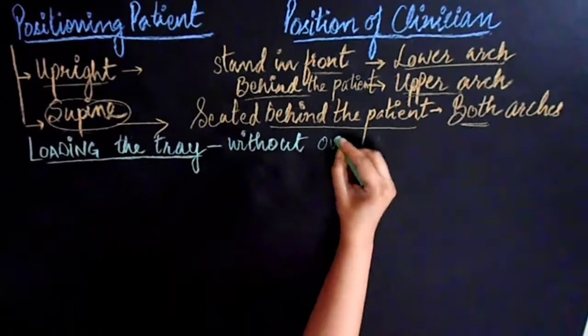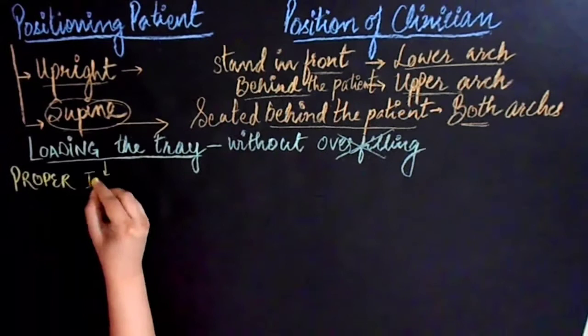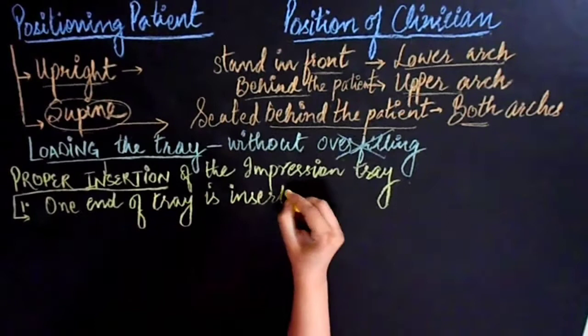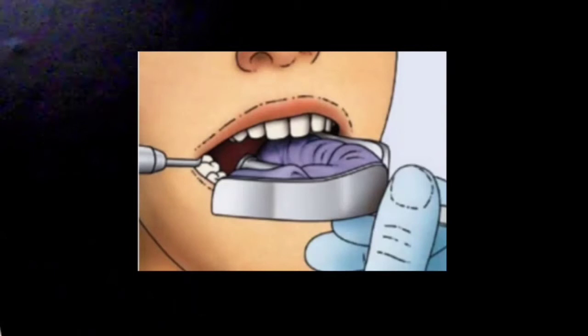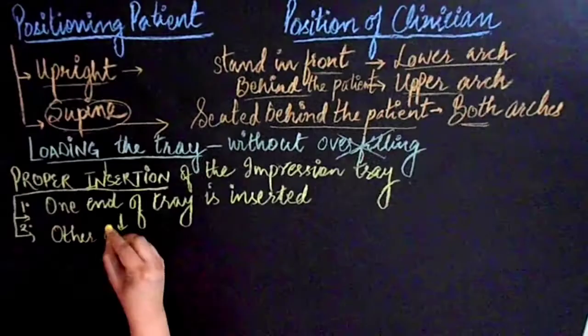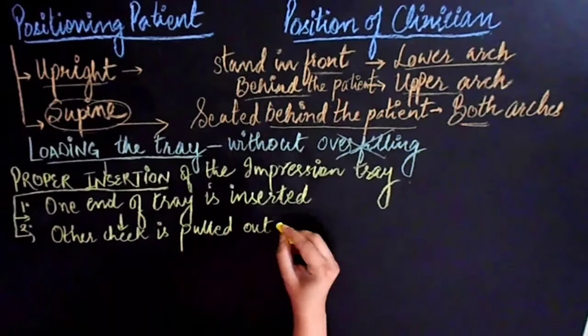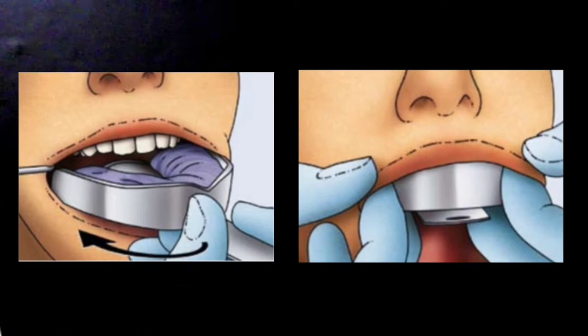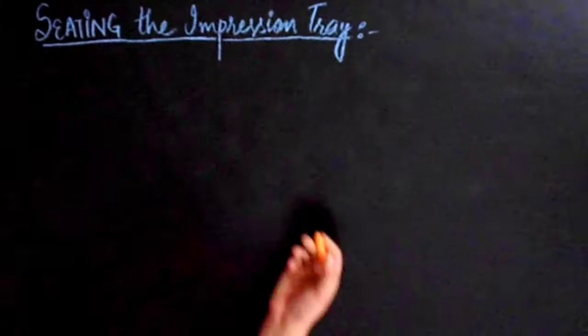After loading the tray correctly without overfilling it, the next thing is proper insertion of the impression tray. When inserting the filled tray into patient's mouth, at first one end of the tray is inserted, then the other cheek is pulled out of the way using the tray itself. The tray is completely inserted and positioned with a rotating movement.